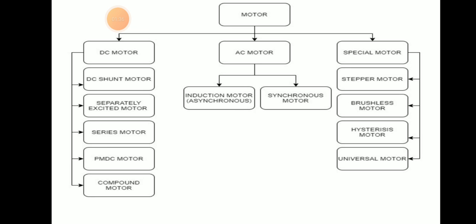Motors can be divided into different types, mainly three types: DC motor, AC motor, and special type motor. DC motor can be divided into DC shunt motor, separately excited motor, series motor, PMDC motor, compound motor. AC motor can be divided into two: induction motor and synchronous motor.